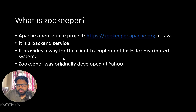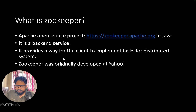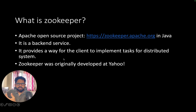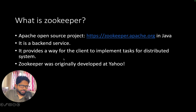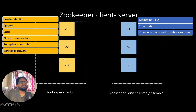What is ZooKeeper? ZooKeeper is an open source project by Apache, written in Java. It's a back-end service that provides a way for clients to implement tasks for distributed systems. Overall, ZooKeeper is a service that other clients connect to in order to get their tasks done. It is designed so that you can model your problem statements with ZooKeeper. It was originally developed by Yahoo.